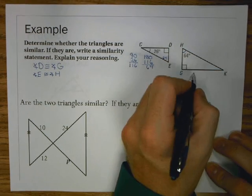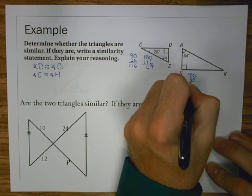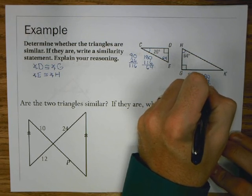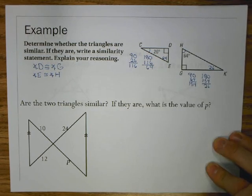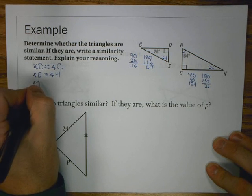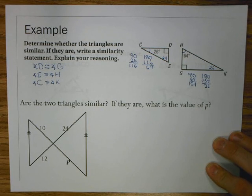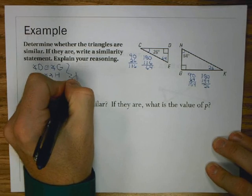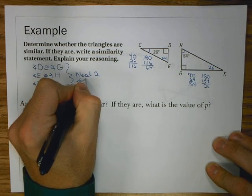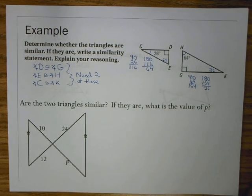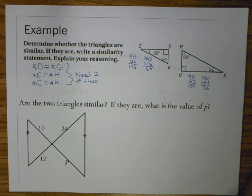I also have that C is 26 and H is 64. Well, I can clearly see those are not the same. But you know, what would angle E be? So if I took 90 and 26, I would get 116, and then subtract that from 180, I would get 64. So that means E is 64. Therefore, E is congruent to angle H. They're both 64.